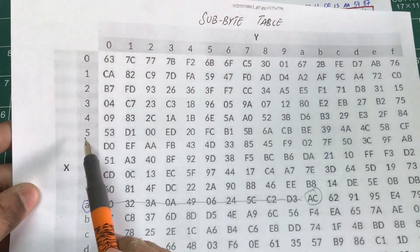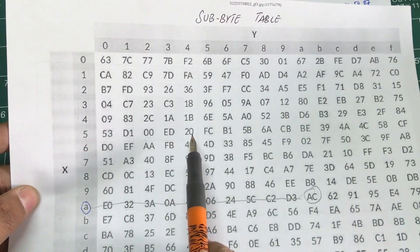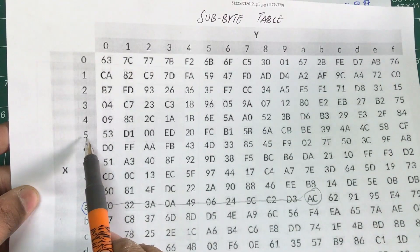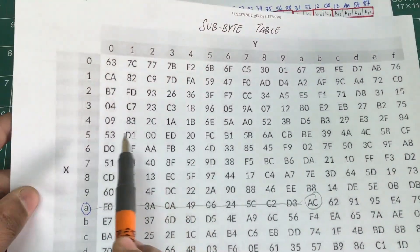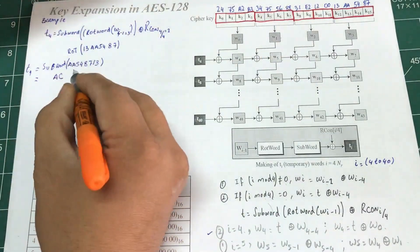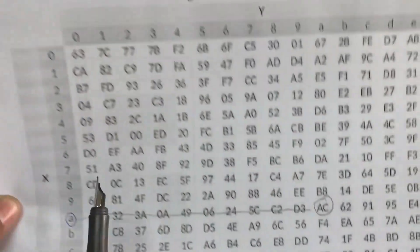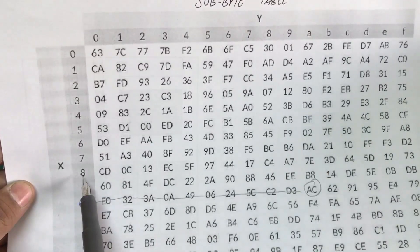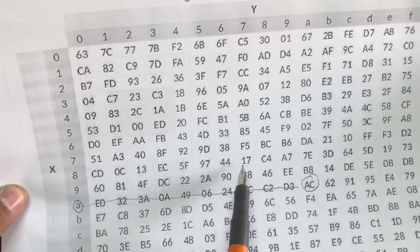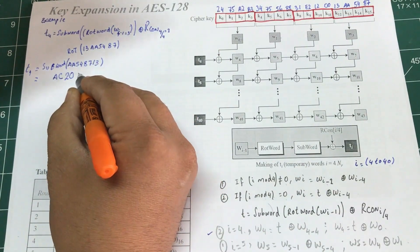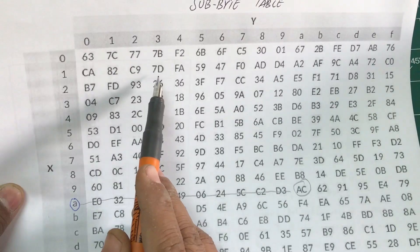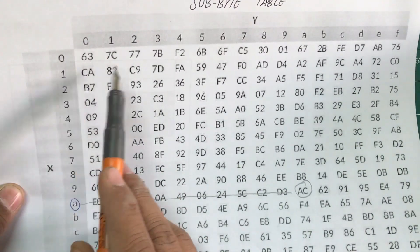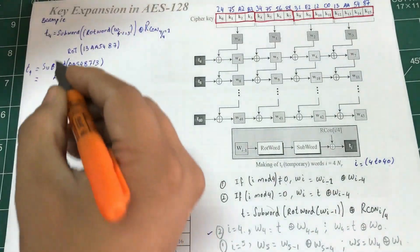What about 54? Row 5, column 4 — that becomes 20. What about 87? Row 8, column 7 — that becomes 17. What about 13? Row 1, column 3 — that becomes 7D. So SubWord(AA548713) = AC20177D.